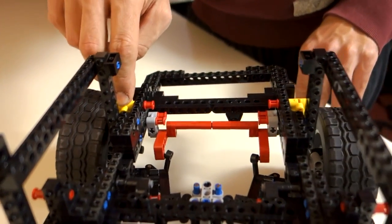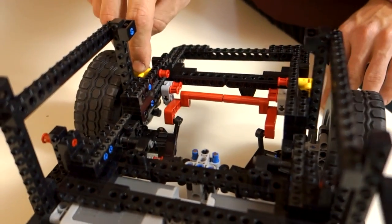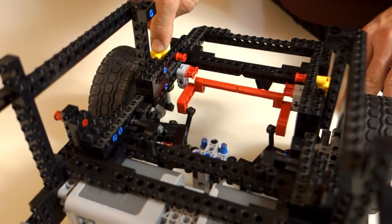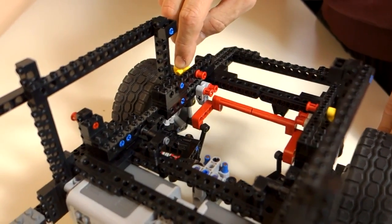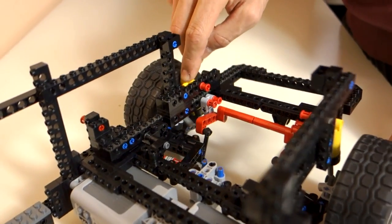The anti-roll bar, however, links both wheels so when the outer wheel compresses the anti-roll bar acts as a torsional spring and basically helps the outer spring deal with the increased weight, thus reducing body roll.